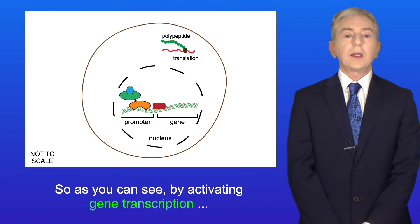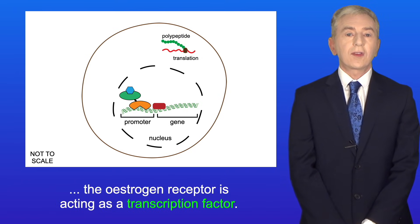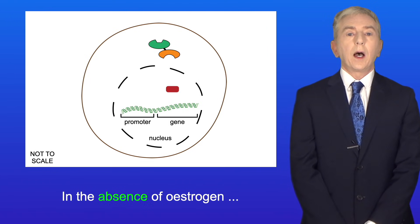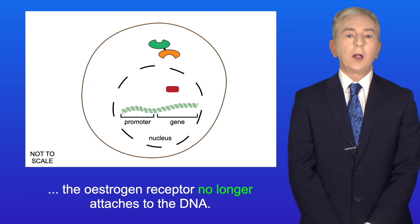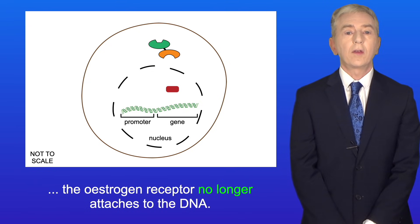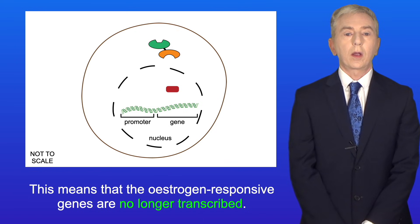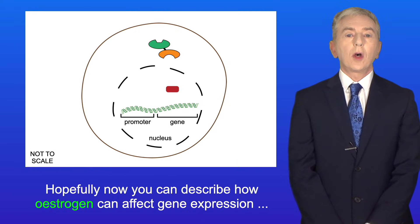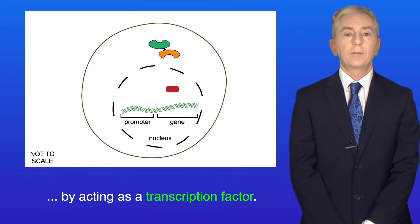So as you can see by activating gene transcription the oestrogen receptor is acting as a transcription factor. In the absence of oestrogen the oestrogen receptor no longer attaches to the DNA, meaning that the oestrogen responsive genes are no longer transcribed. Hopefully now you can describe how oestrogen can affect gene expression by acting as a transcription factor.